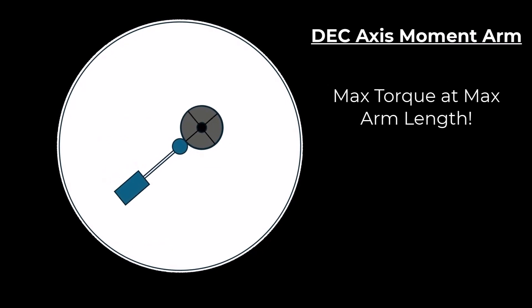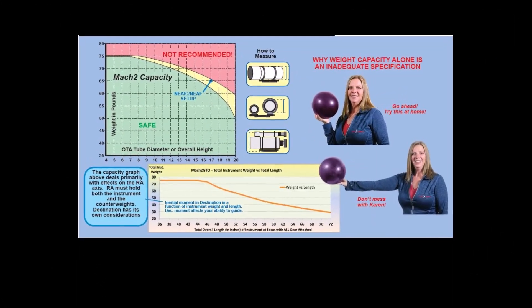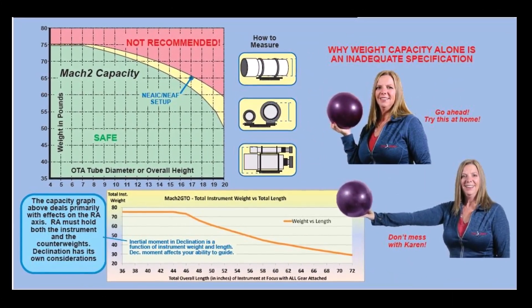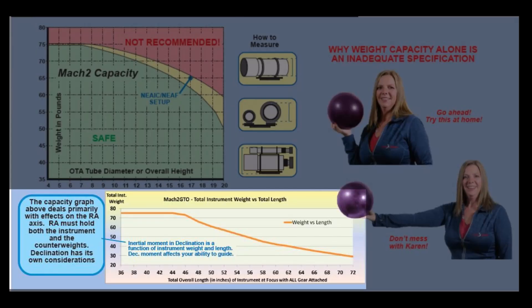For more information on this, you can actually go check out Astro-Physics. They post a very interesting graph that shows the impact of the size of an OTA on the capacity of their mount. So it's really a function of the physics of your rig.